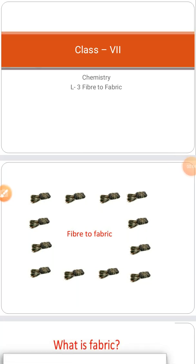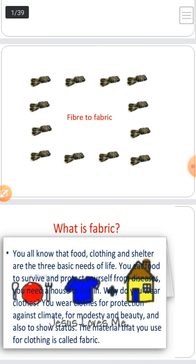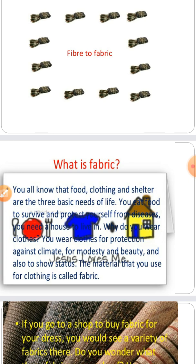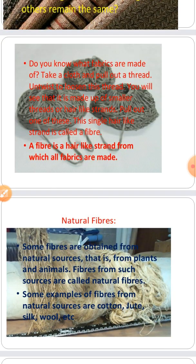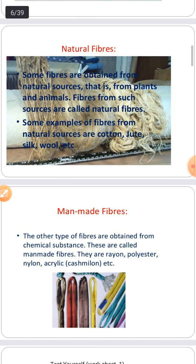Hello students, welcome back after a long vacation. We have already studied chapter three, Fiber to Fabric, before the vacations. Here I am revising this chapter again. What is fabric? A fiber is a hair-like strand from which all fabrics are made. There are two kinds of fibers: natural fibers and man-made fibers. Fibers obtained from nature are known as natural fibers. Examples include cotton, jute, silk, and wool.